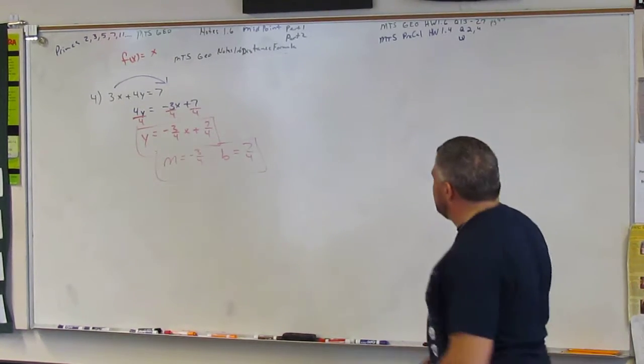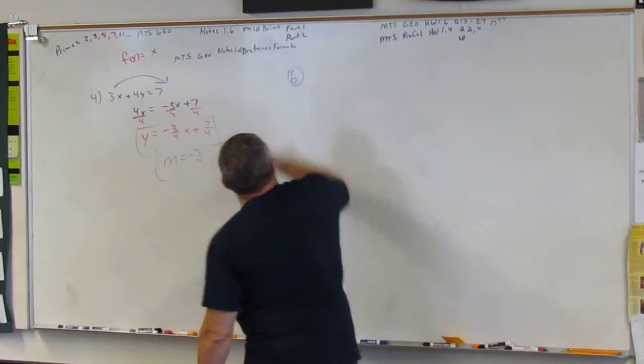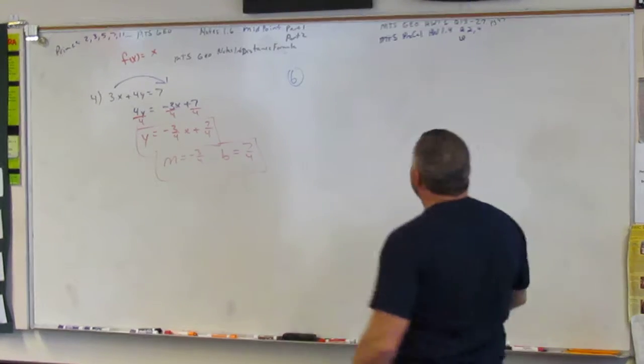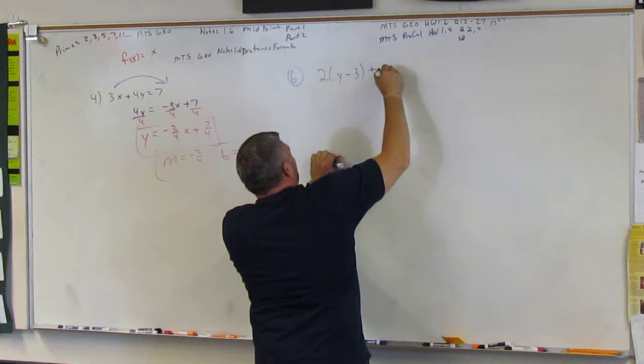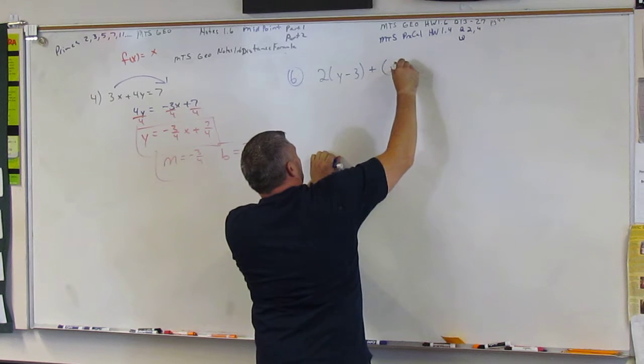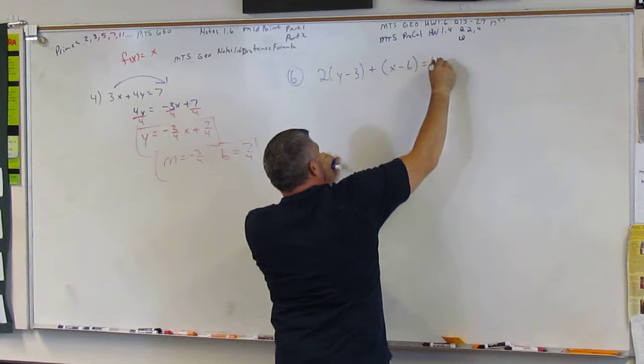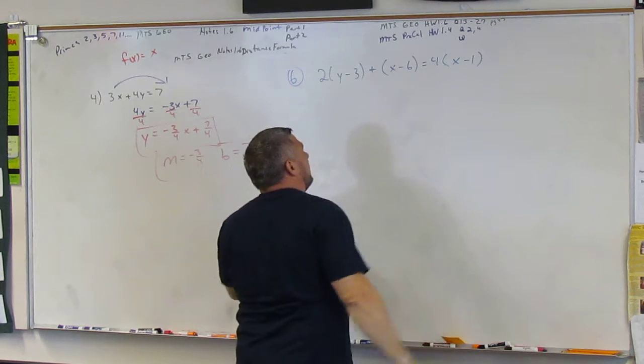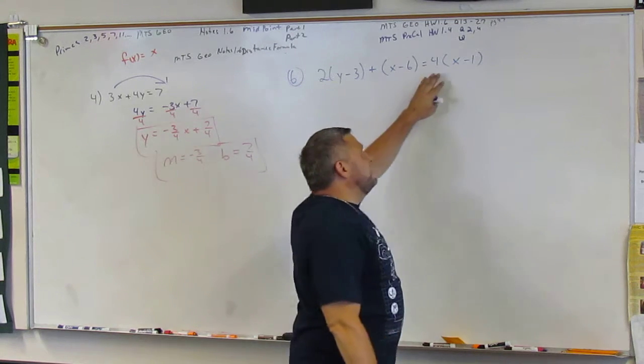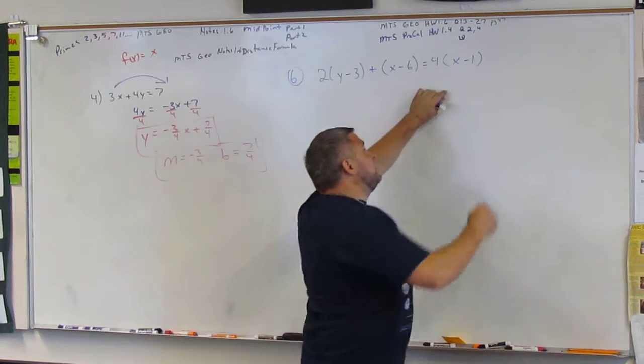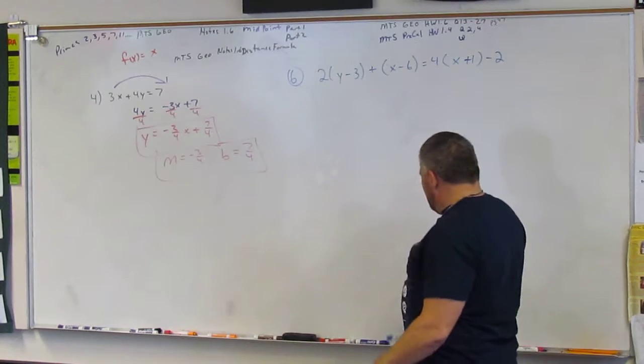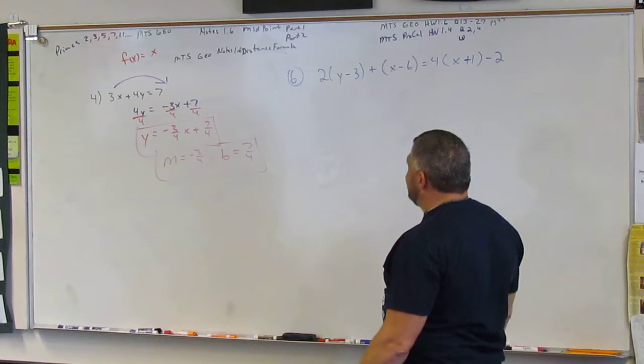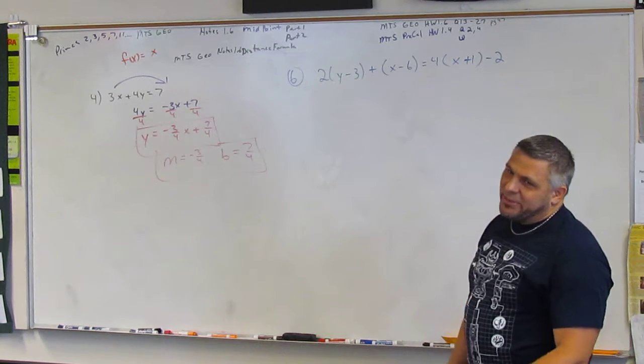Alright. Does somebody want to read that to me? I'm not a big boy. Okay. Two, parentheses, y minus three, parentheses, plus parentheses, x minus six, equals four, parentheses, x plus one, minus two. Whoa, whoa, whoa. Four, parentheses, x minus one, and then minus two? X plus one. X plus one. Minus two. And then minus two? Okay. Haul it back, y'all. Alright. We still got to solve for y. But in this case, we have to do a whole bunch of stuff first.